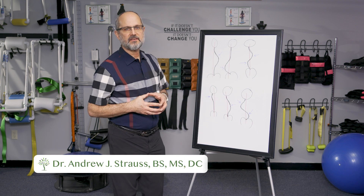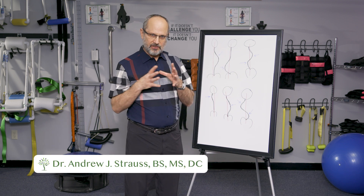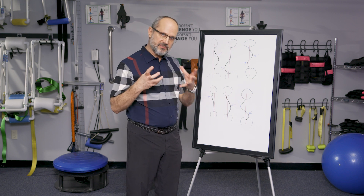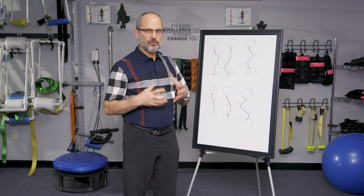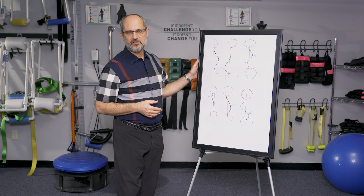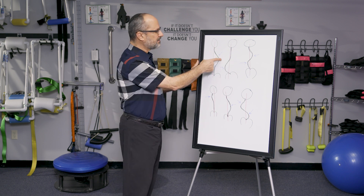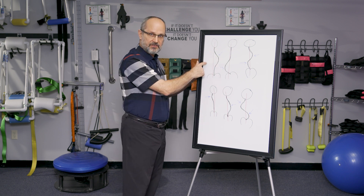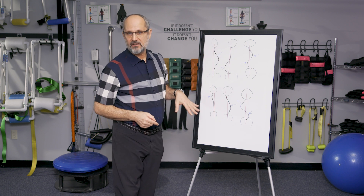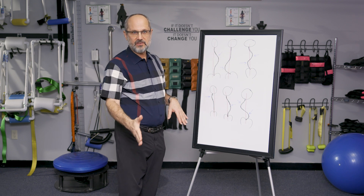In this video, I want to talk to you about the different types of scoliosis — the different curve patterns — so that you can understand how yours fits into the greater whole. Keep in mind that in all of these images, we're looking at the person from the back, so this is the right side, this is the left side. The red line would be the gravity line — this would be if their spine was perfectly straight.